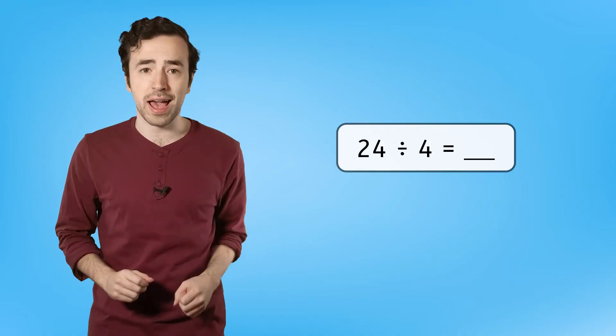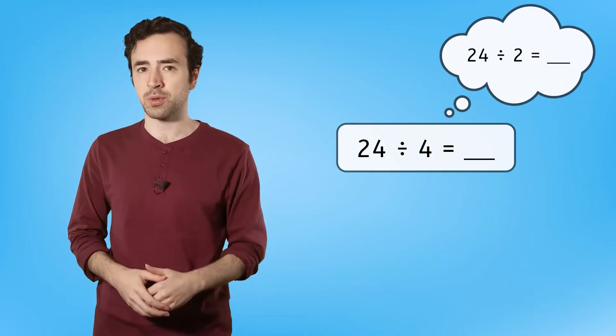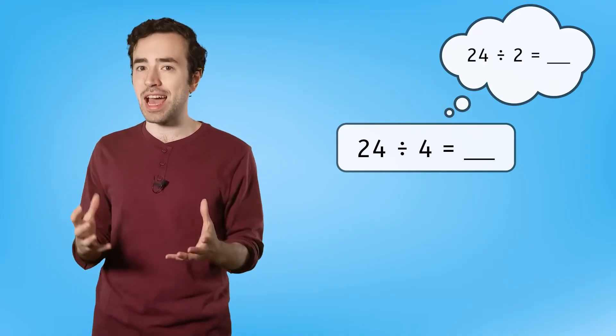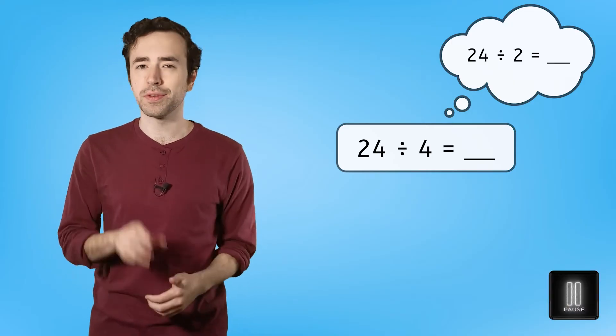So, let's say we need to solve 24 divided by 4, but we want to try using our related facts to help. If we know what 24 divided by 2 equals, then we can split that amount in half to figure out the answer to 24 divided by 4. Give it a try. Pause here to solve in your guided notes.